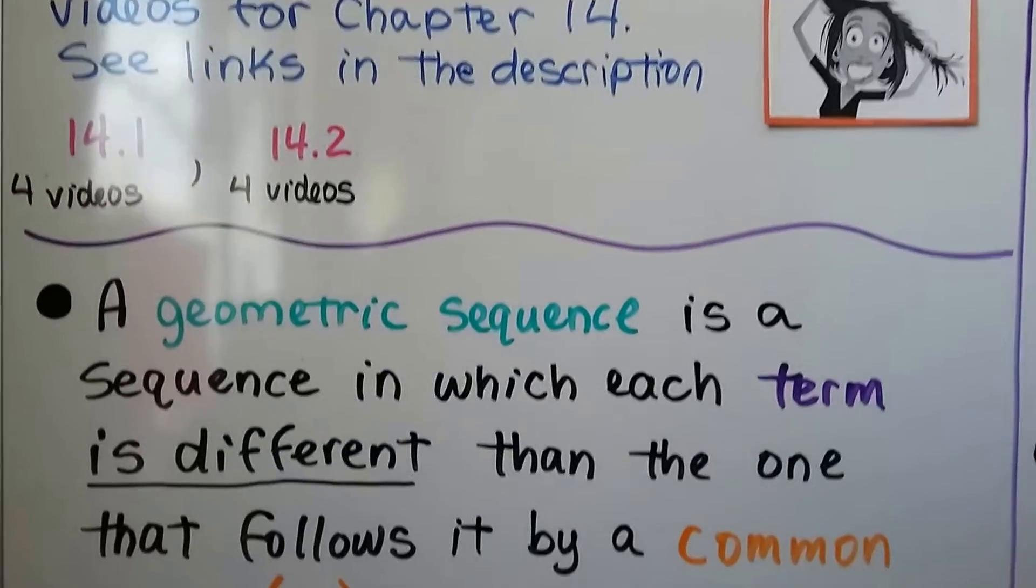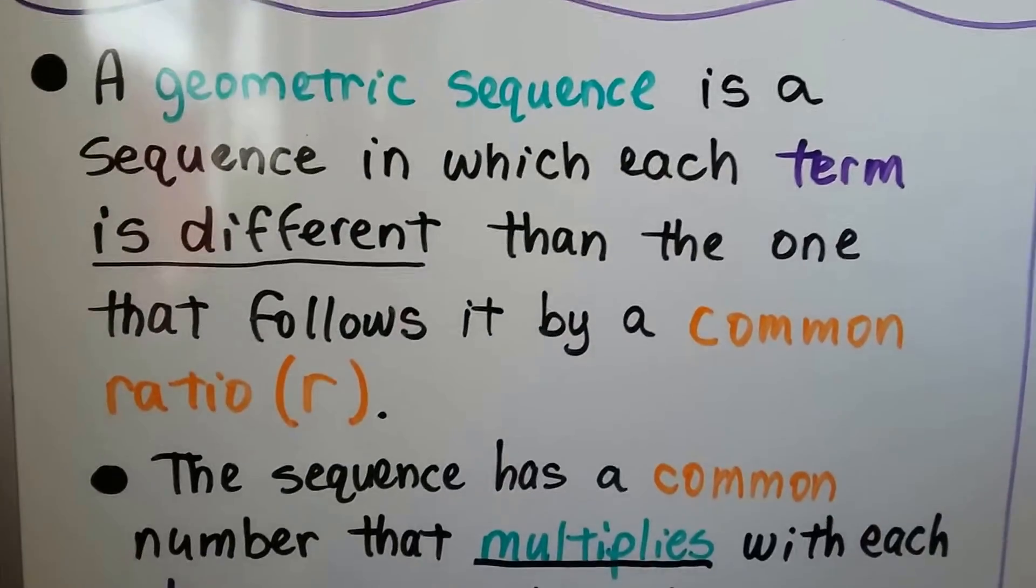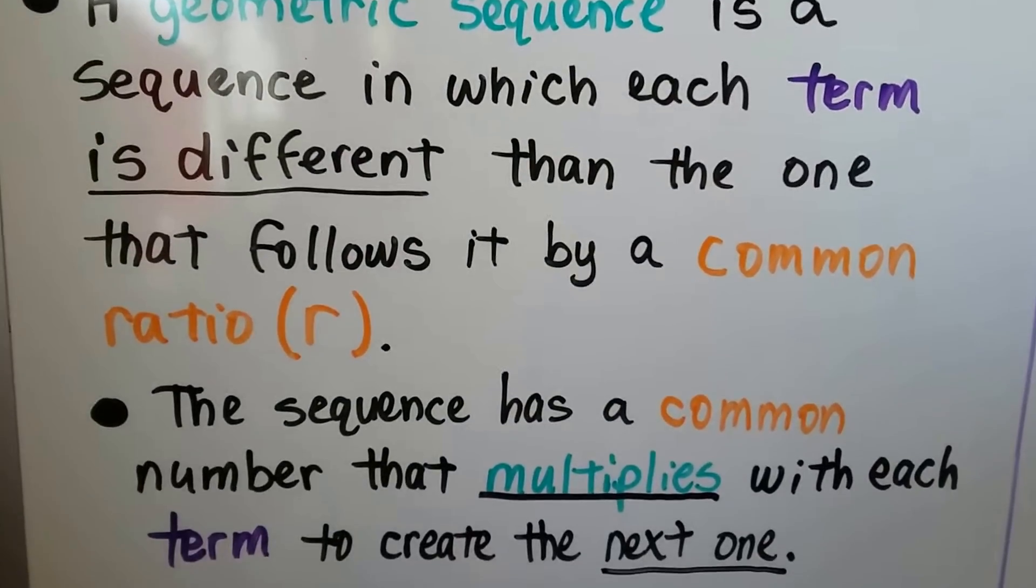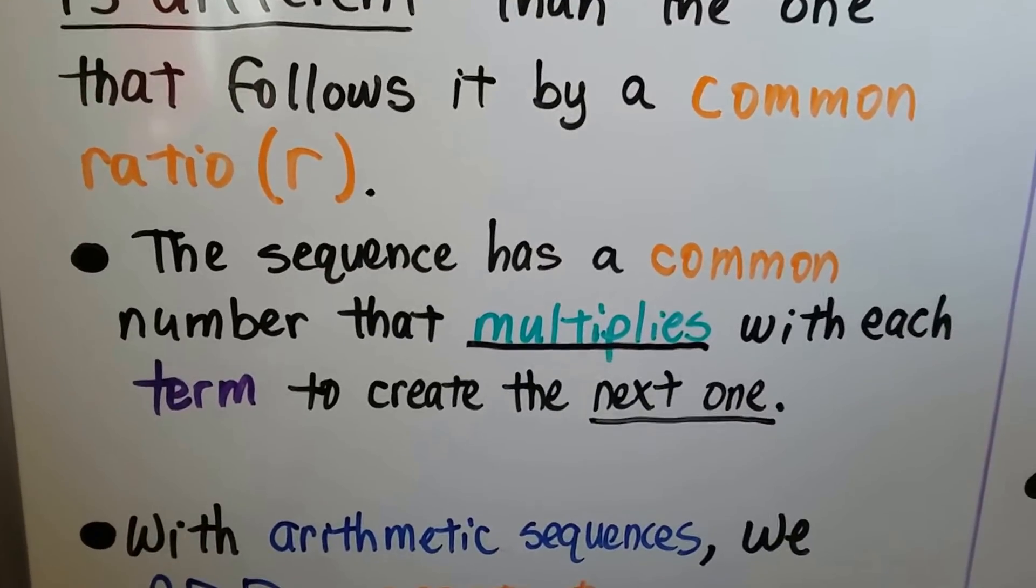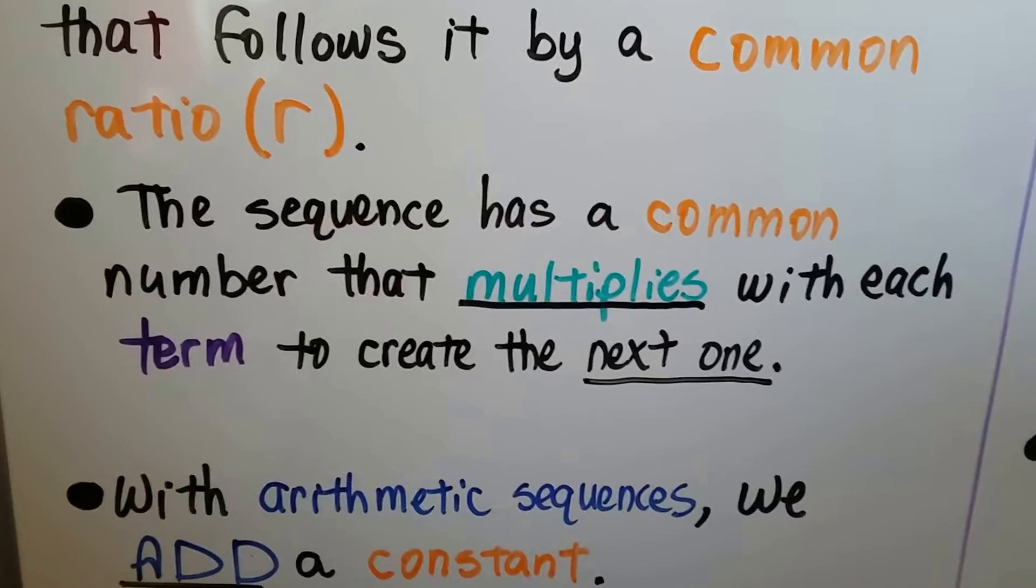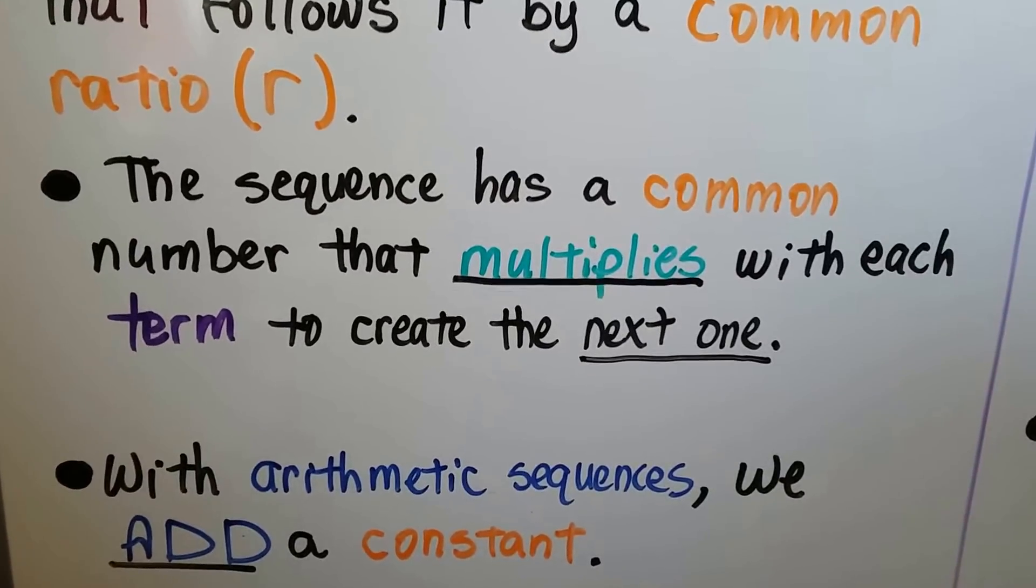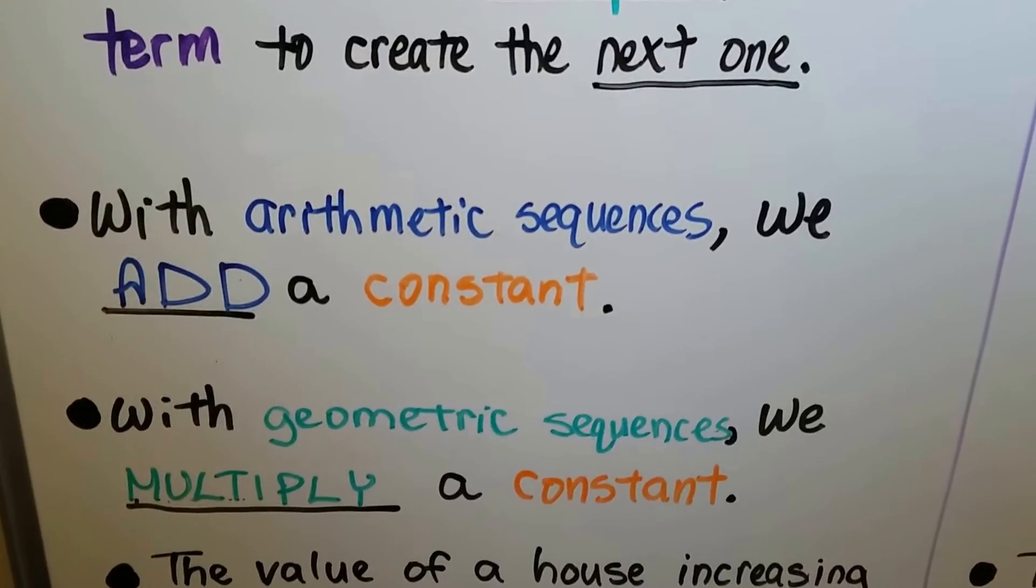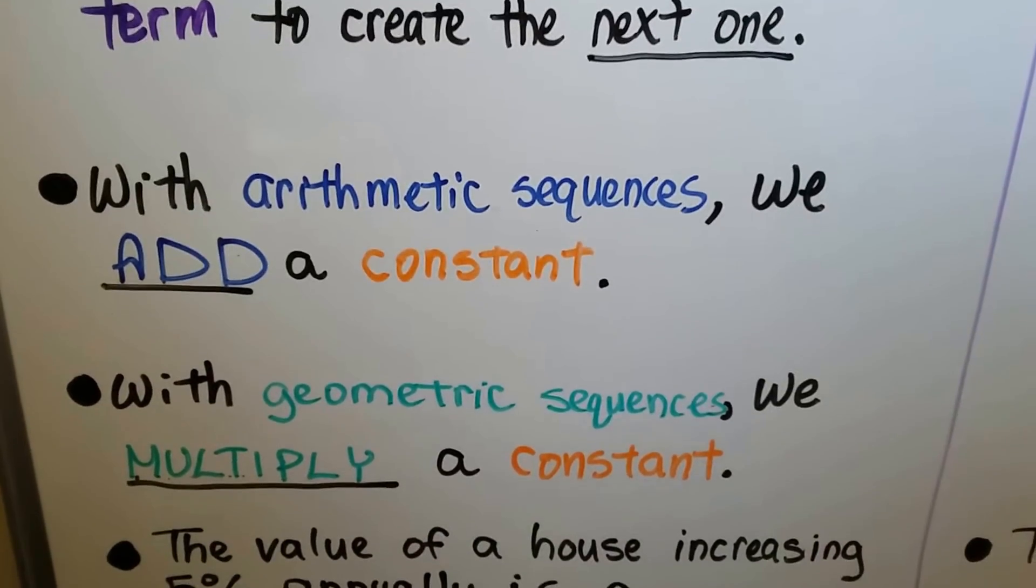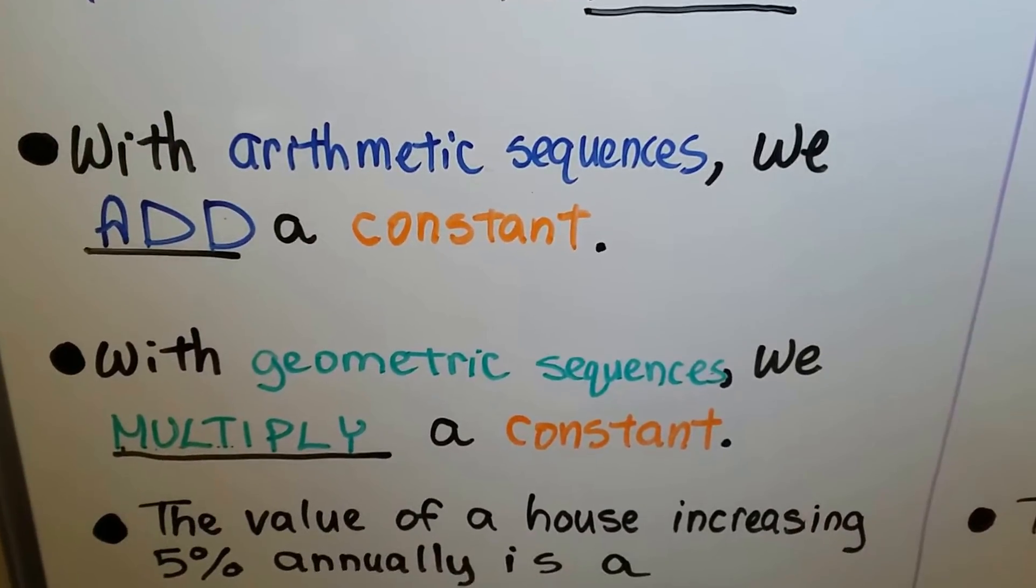A geometric sequence is a sequence in which each term is different than the one that follows it by a common ratio, r. The sequence has a common number that multiplies with each term to create the next one. With arithmetic sequences we add a constant. With geometric sequences we multiply a constant.